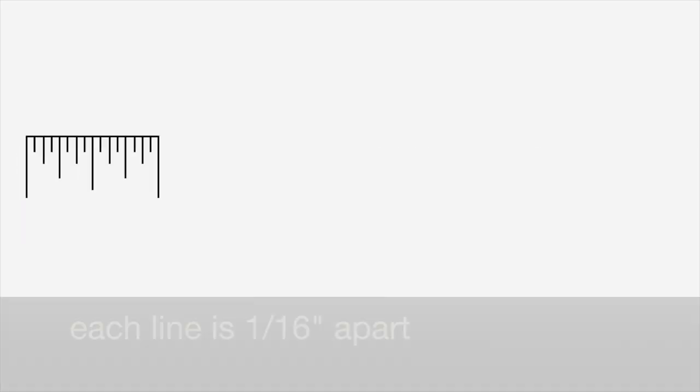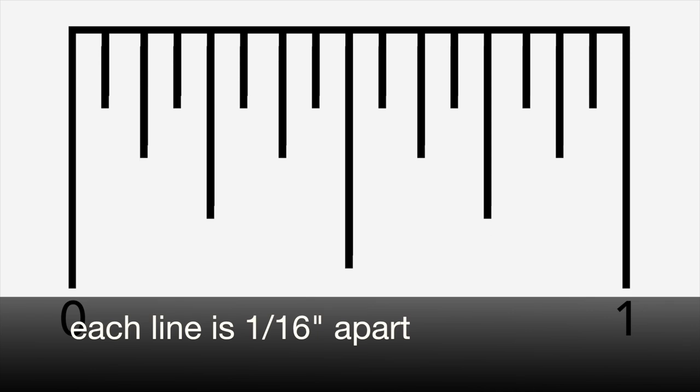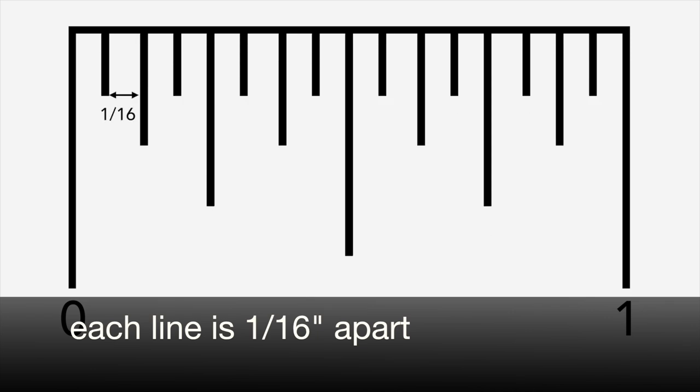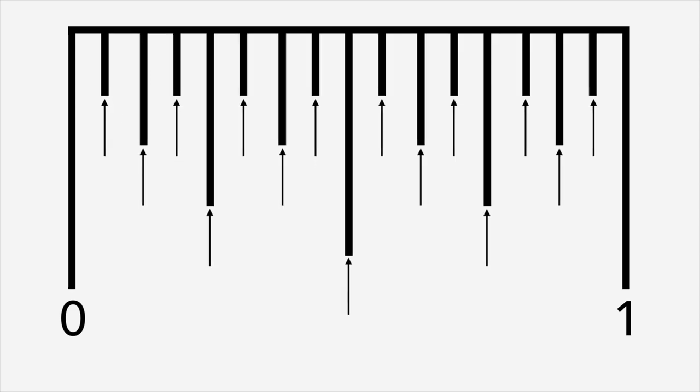The typical ruler has 15 ticks between the large inch markings and they're spaced 1/16th of an inch apart. They range in length from short to longer. Let's talk a little more about what measurements each of these markings represent.